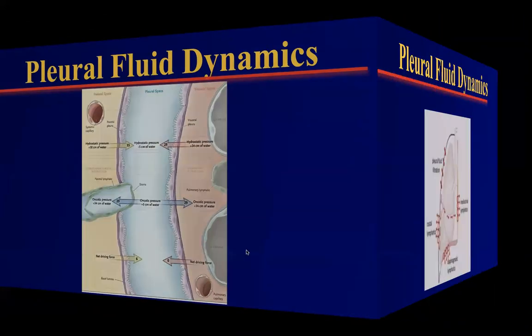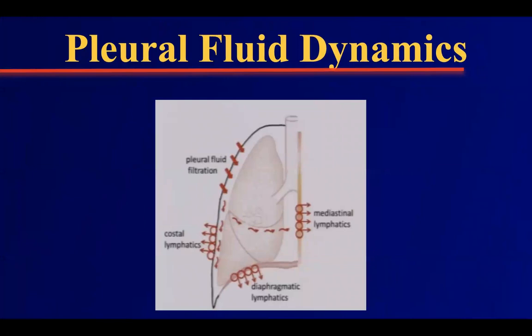This pleural fluid is absorbed by three sites: diaphragmatic lymphatics, costal lymphatics, and mediastinal lymphatics. When we talk about pleural effusion, it means that either the pleural fluid production is increased, outbalancing the absorption, or the pleural fluid is not absorbed very well. There are many reasons that can cause pleural fluid accumulation by these terms.